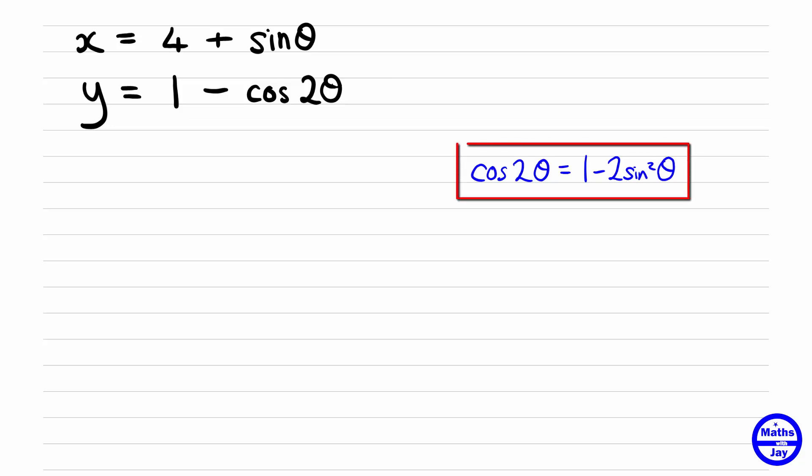So let's just number our equations and have a look what we have to do. We know that we can write cos2 theta in terms of sin theta. So that means we want to use the first equation to write down sin theta. Equation 1 tells us that sin theta is x minus 4, just subtracting 4 from both sides.